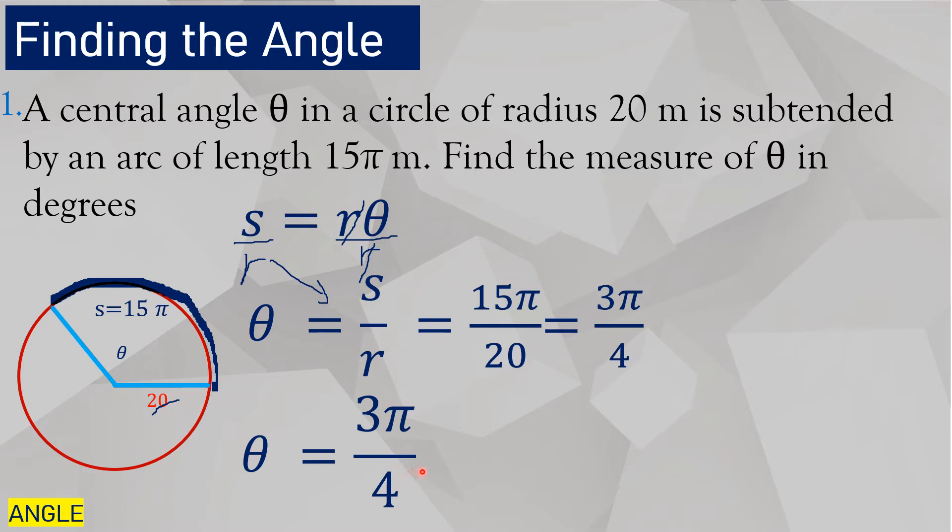However, theta is 3 pi over 4 radians, but you need to go back to the question. Theta must be in degrees. Therefore, this 3 pi over 4 must be converted into degrees. So we multiply that by 180 degrees over pi, and that will give us 135 degrees.